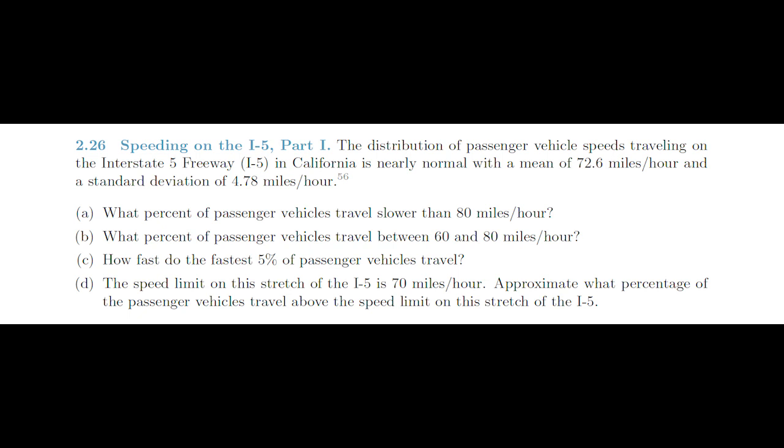The first question says what percent of passenger vehicles travel slower than 80 mph? Next it says what percent of passenger vehicles travel between 60 and 80 mph? How fast do the fastest 5% of passenger vehicles travel? And finally, the speed limit on this stretch of the I-5 is 70 mph. Approximate what percentage of the passenger vehicles travel above the speed limit on this stretch of the I-5?